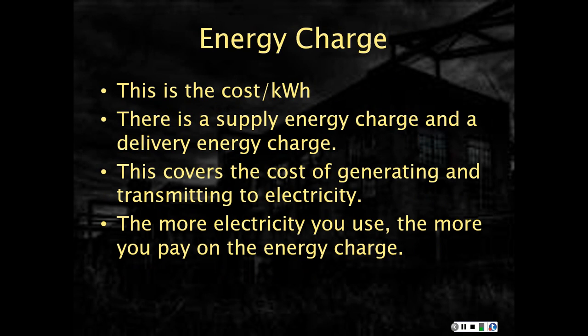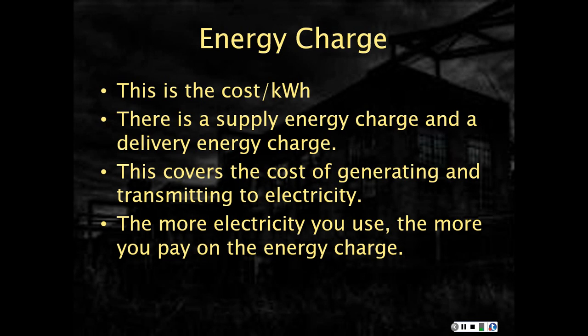The next major component within a consumption-based tariff is the energy charge. This is the cost per KWH and it covers both the supply side and the distribution side of the energy charges. On the supply side, this covers the cost of generation and transmission; on the distribution side, it covers the actual cost of getting the electricity to your building. This is based on a cost per KWH, so the more electricity you use, the more you pay.